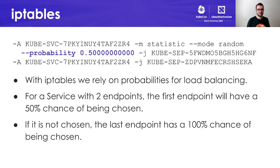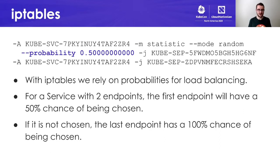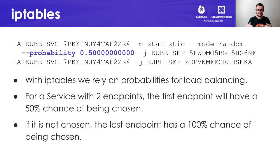kube-proxy watches those endpoint slices and configures IP tables on each node. The IP tables configuration we're writing is very much based on probabilities. I copied this little snippet from IP tables config on a node in one of my Kubernetes clusters that had a two endpoint service — that just means a service with two pods behind it. We have two key lines here: first, if you're targeting this service, there should be a 50% probability that you'll choose this specific service endpoint.